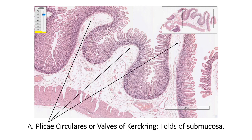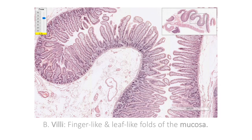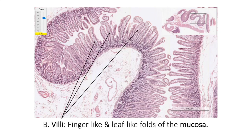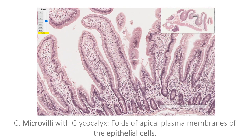The plicae circulares are the permanent circumferential folds of the submucosal layer. The second set of folds are the villi, which are the finger-like folds of mucosa, where the lining epithelium is thrown into numerous folds with a core of lamina propria. The final level of folding is seen as finger-like folds on the apical plasma membrane of epithelial cells called microvilli. These are coated by a specialized glycocalyx which helps in both digestion and absorption. These tens of thousands of microvilli provide the surface with the appearance of a brush border or striated border.